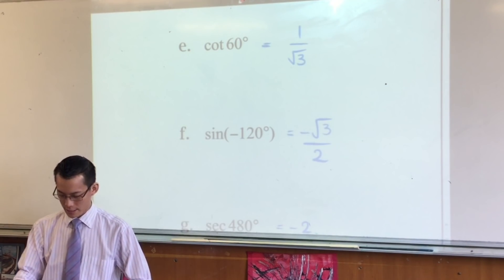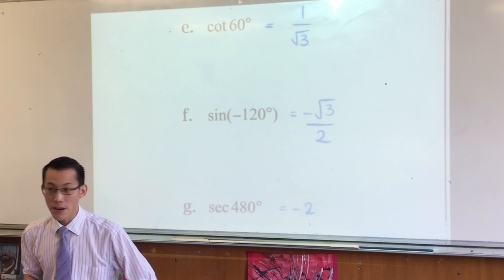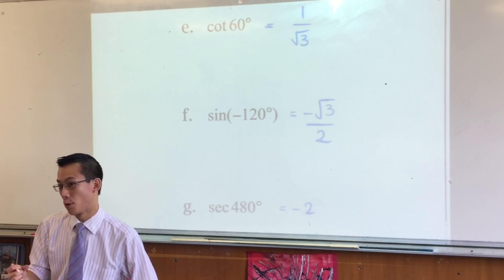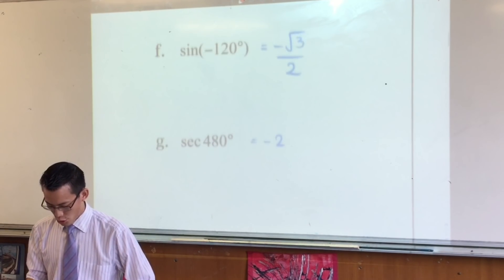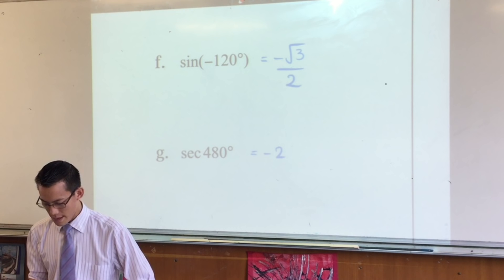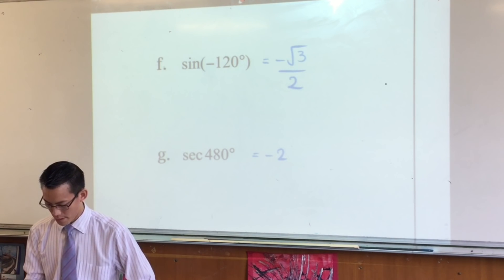So you're at 1 over root 3 for cot 60. You don't have a cot sec or cosec button on your calculator, but all you have to do is input 1 on tan 60, and then there's your other exact values. Are you happy with that? Yeah, the negatives, they do matter.